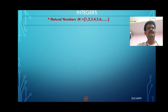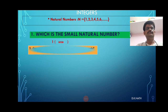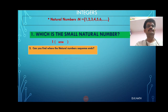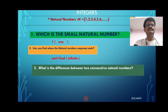Natural numbers, denoted by N: 1, 2, 3, 4, 5, 6 and so on. Which is the smallest natural number? Everybody can say it is 1. Can you find where the natural number sequence ends? It is infinite. What is the difference between two consecutive natural numbers? It is 1.